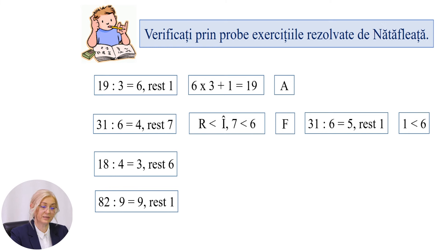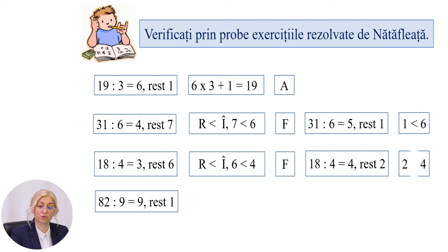18 împărțit la 4 este egal cu 3 rest 6. Ați observat că restul este mai mic decât 4, deci nu este posibil, este fals. 18 împărțit la 4 este egal cu 4 rest 2, deci 2 este mai mic decât 4, adevărat. 82 împărțit la 9 este egal cu 9 rest 1. 9 împărțit la 9 plus 1 este egal cu 82, este adevărat. Sunt convinsă că ați îndeplinit corect exercițiile date.